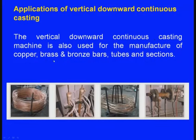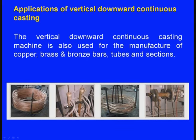The vertical downward continuous casting machine is also used for manufacture of copper, brass, and bronze bars, tubes, and sections. These are all the different components produced by vertical downward continuous casting.